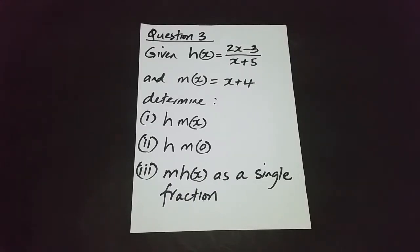Okay, we're taking a look at a third question here that says given h(x) is equal to 2x minus 3 over x plus 5. h(x) clearly is a fractional function, and it says m(x) is equal to x plus 4. Determine the following.